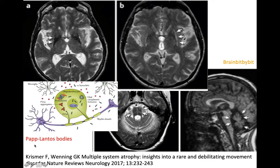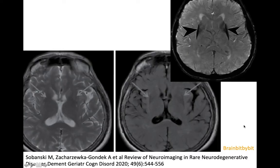So not Lewy bodies in the oligodendrocyte, but glial cytoplasmic inclusion bodies. On imaging, because of the degeneration and iron deposition in the putamen, you can find low signal on T2-weighted images in the lentiform nucleus, sometimes a putamenal rim, and also hyperintensity of pontine fibers and atrophy of the pons and cerebellum.